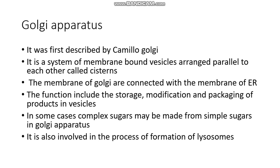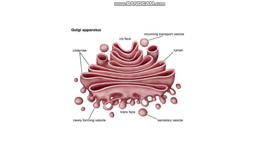Golgi apparatus was first described by Camillo Golgi — you can read more about him in the NCERT book. The Golgi apparatus is a system of membrane-bound vesicles arranged parallel to each other, called cisterns. It has a cis face at one end and a trans face at the other end, and each parallel vesicle is called a cistern.